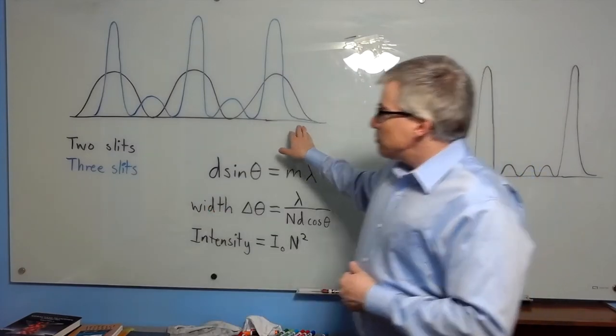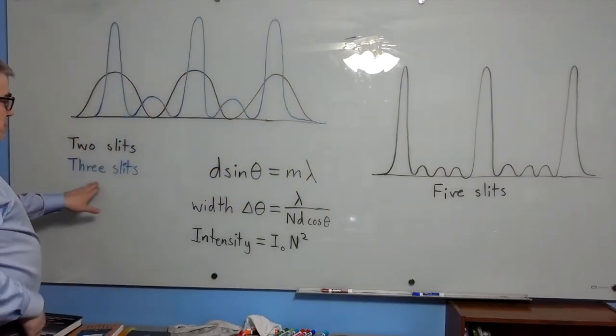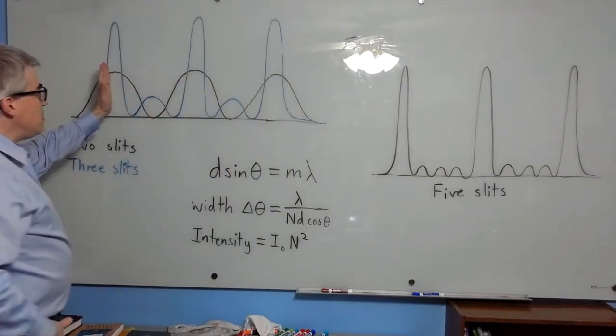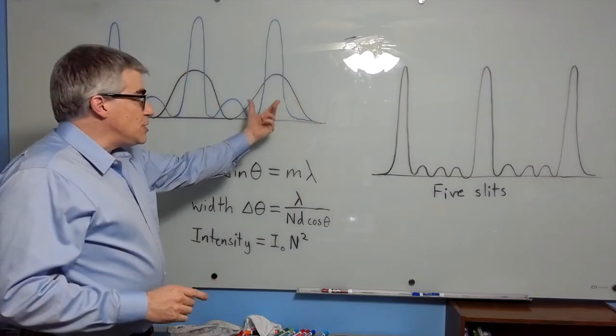Here's the diagram that shows the double-slit pattern and the triple-slit pattern. If you have three slits, the maxima do not change location. They do get narrower.